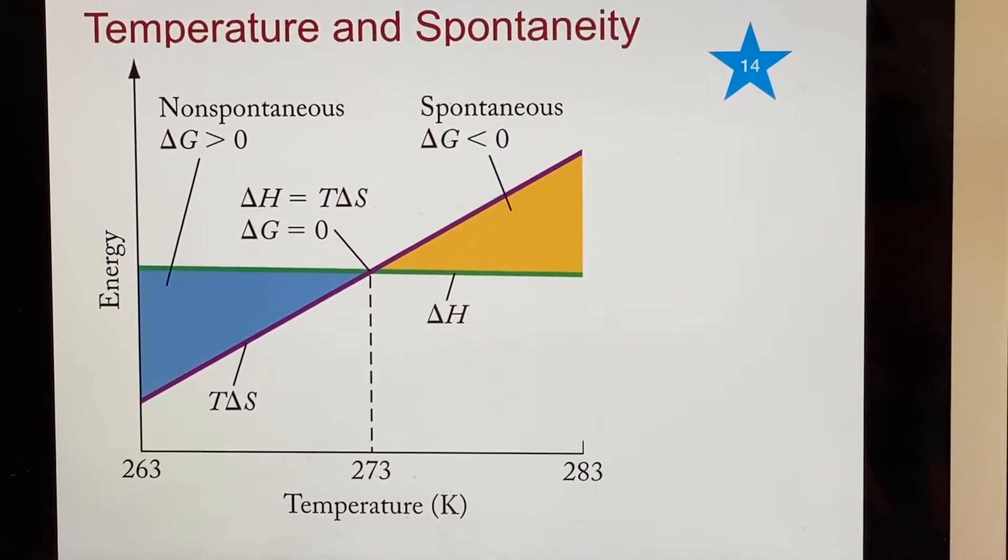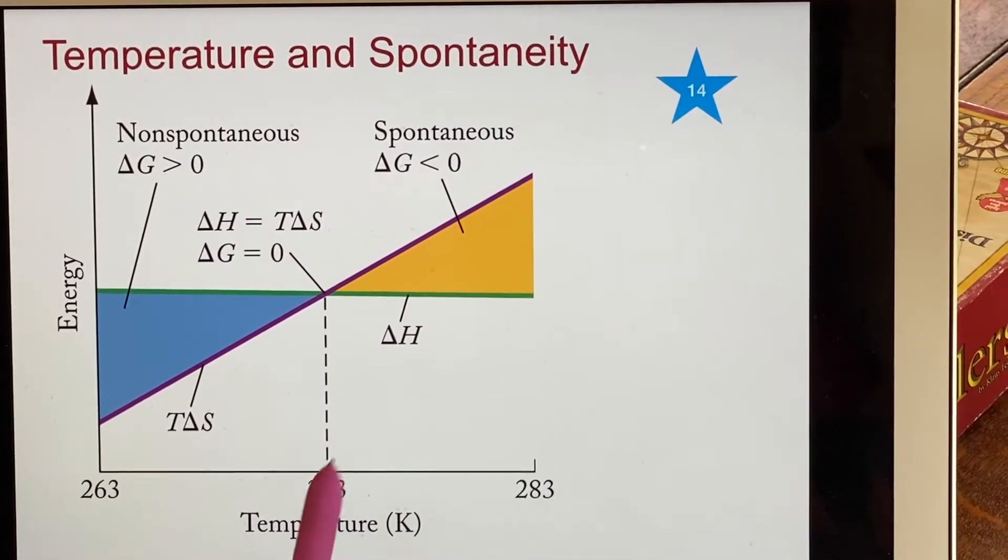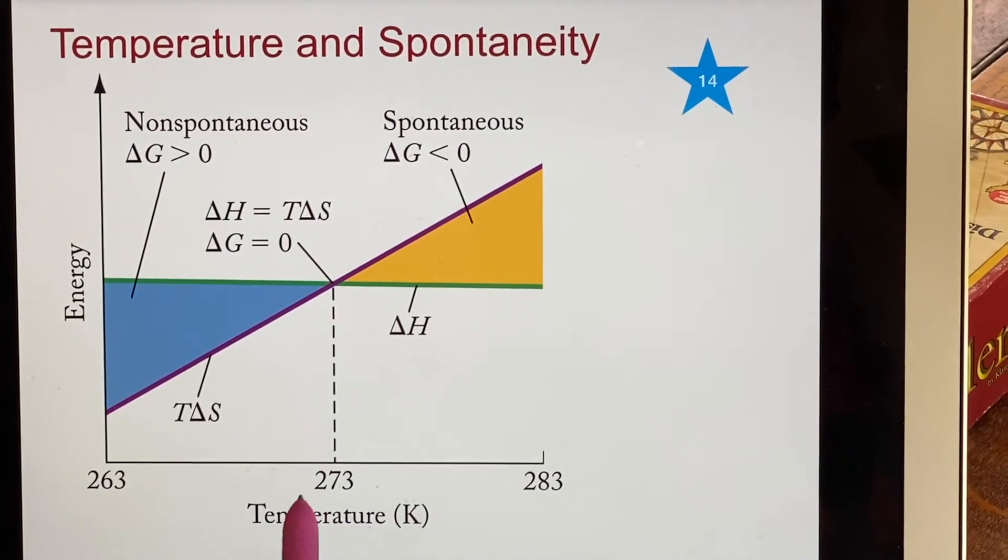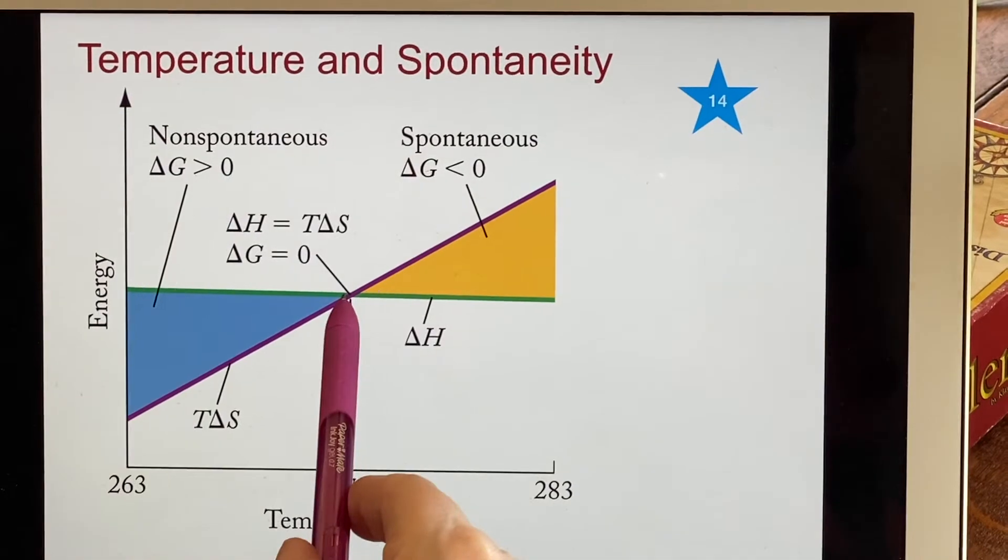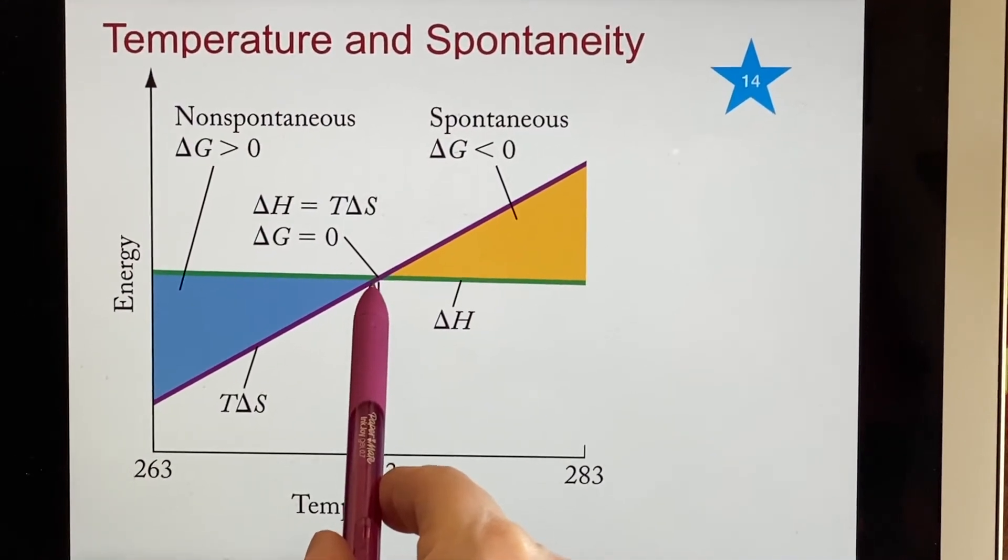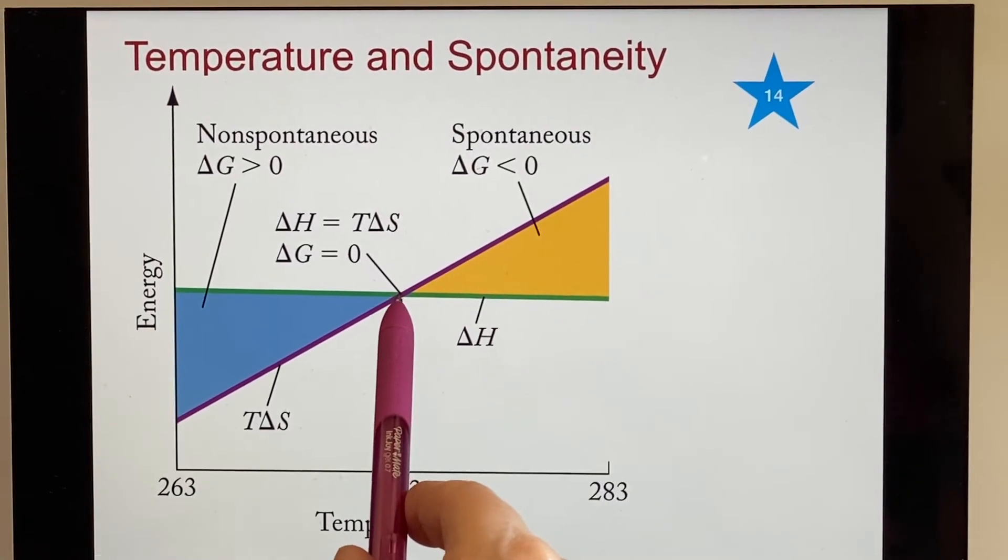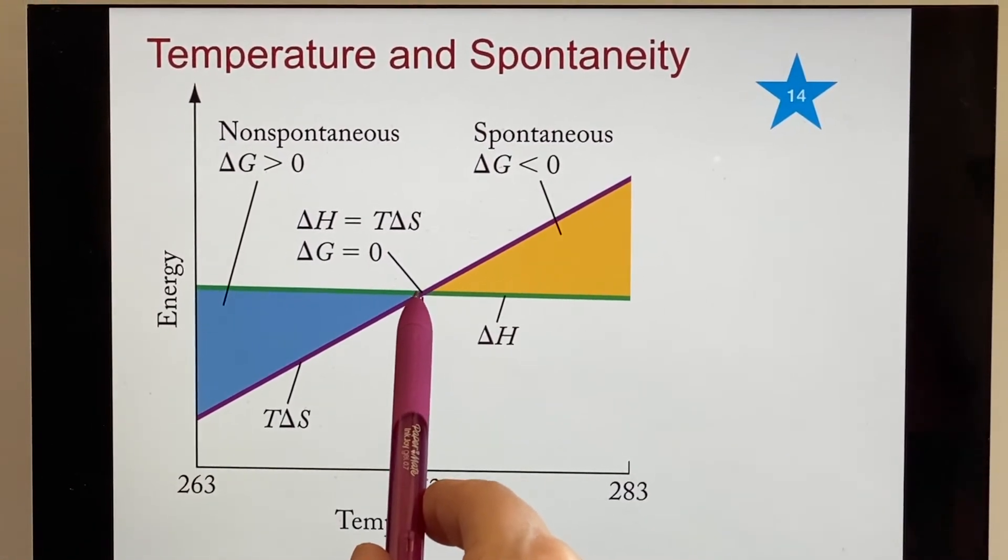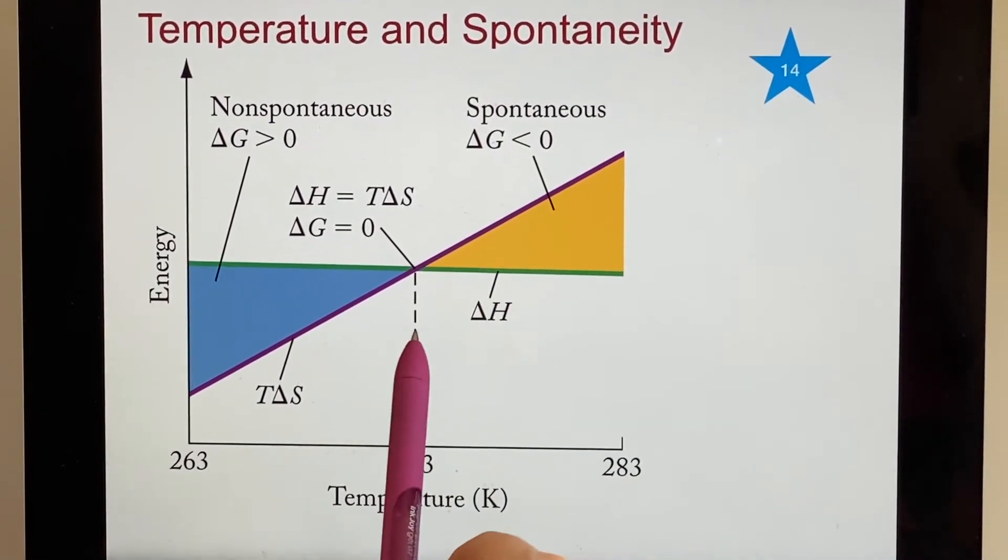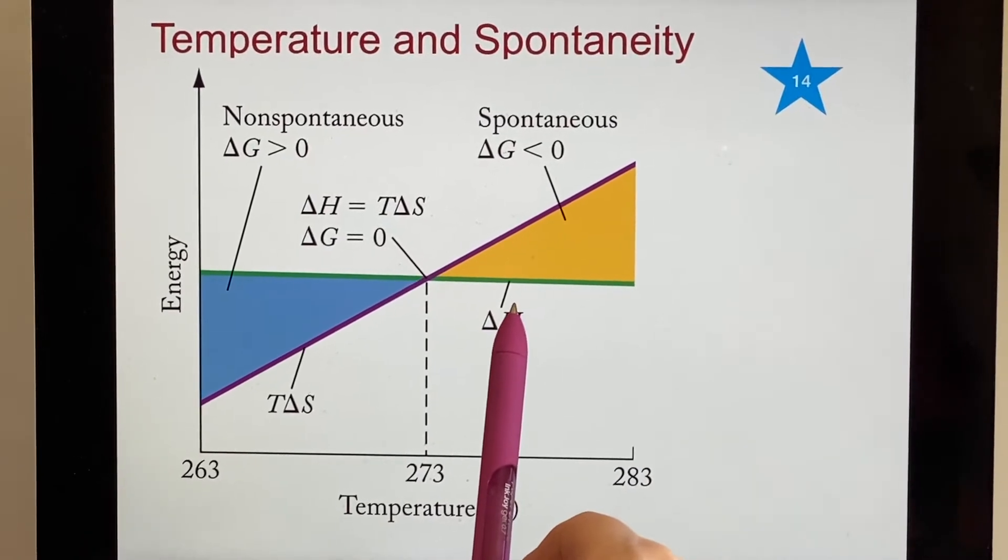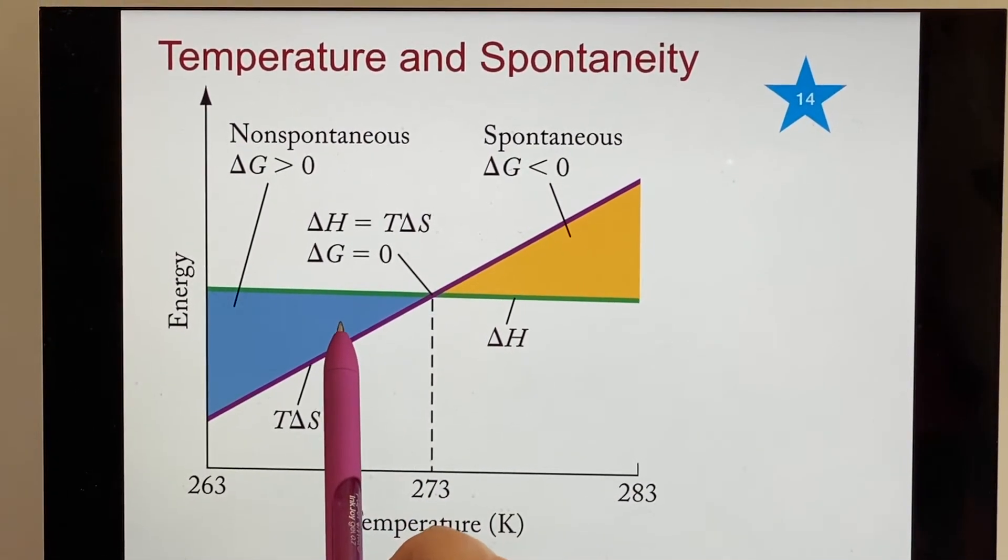Here in 14 what we're trying to talk about is a particular situation. Let's look at this temperature, 273 Kelvin. Well that's zero Celsius when ice melts or water freezes. You can think of this point as being where you're in between. So maybe this is a very cold glass of water with ice in it. If you raise the temperature you end up expecting the ice to melt. If you lower the temperature you expect the water to turn into ice.